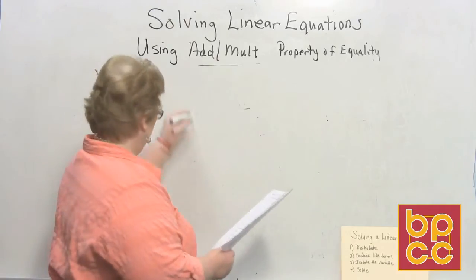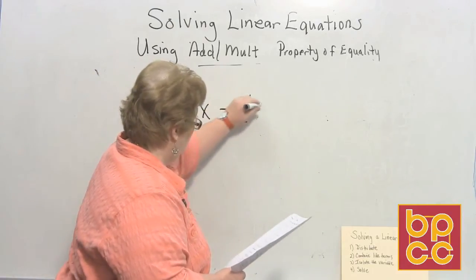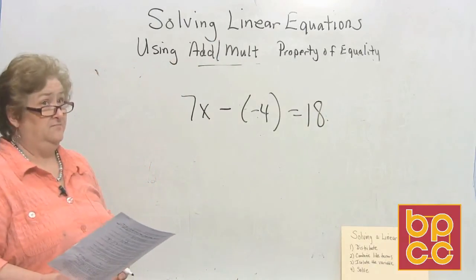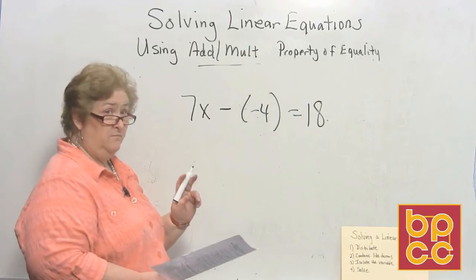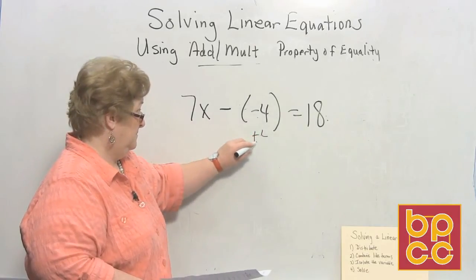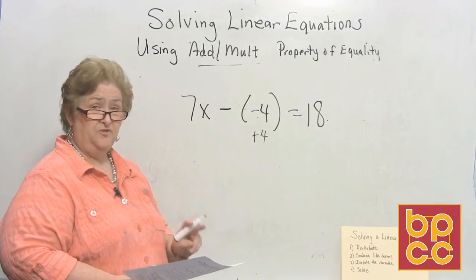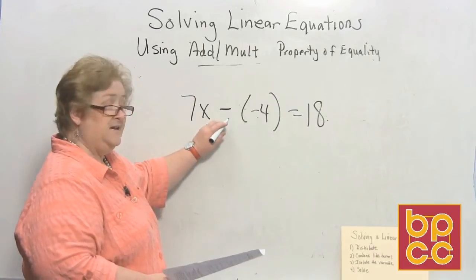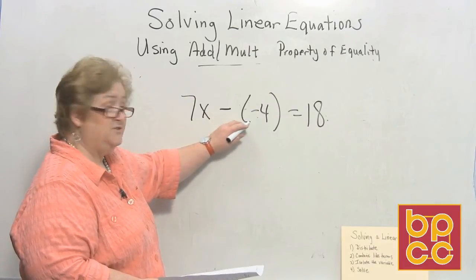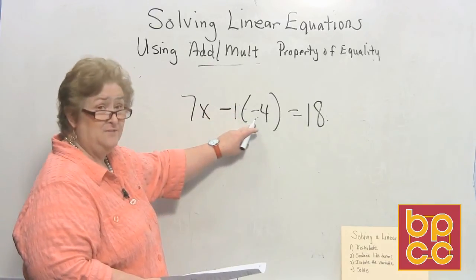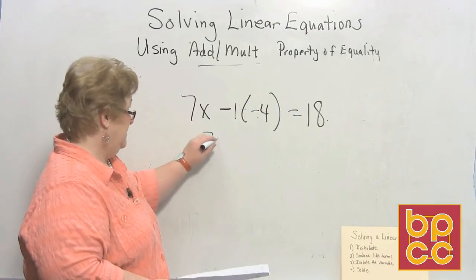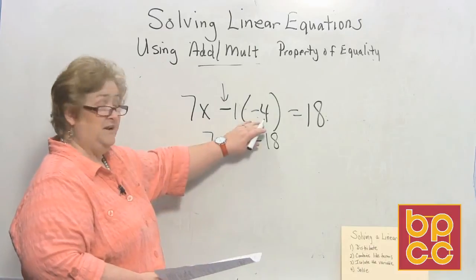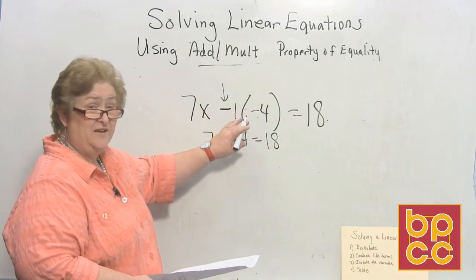This is going to be kind of tricky, so watch out. I'm going to have seven x minus a negative four equal 18. Now there's something you need to look at here. Because if you move that negative four by adding a plus four, we have a little bit of a problem — you forgot to look at what is outside the parentheses. That negative outside the parentheses is like a negative one — it says change whatever's in there to the opposite. So a negative one times a negative four is a positive four. You've got to really watch those negatives outside of parentheses. Even if there isn't an operation inside the parentheses, there was a negative outside and that changes everything.